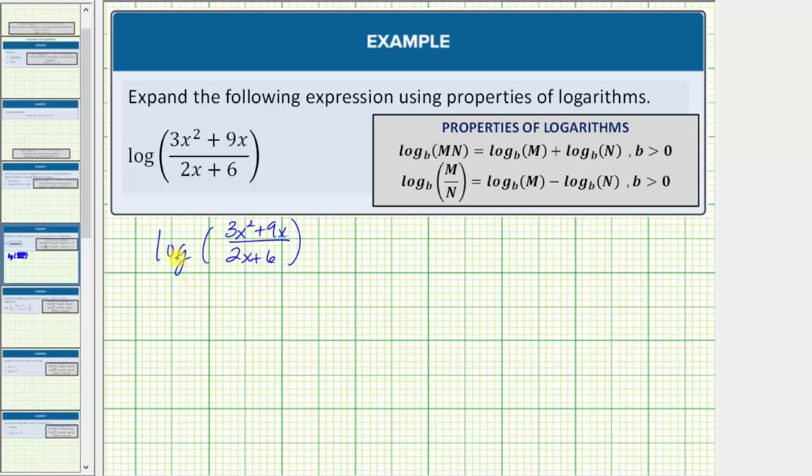To expand the logarithm, we will be using the product and quotient property of logarithms shown here, but before we do this, let's see if the expression the quantity three x squared plus nine x divided by the quantity two x plus six will simplify by first factoring the numerator and denominator.